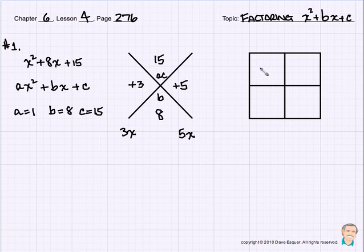Let's look at our box now. In the upper left corner always goes AX², so we put in X². In the lower right goes the constant, which is 15. We place 3X and 5X in the remaining boxes. These came from our crisscross method.